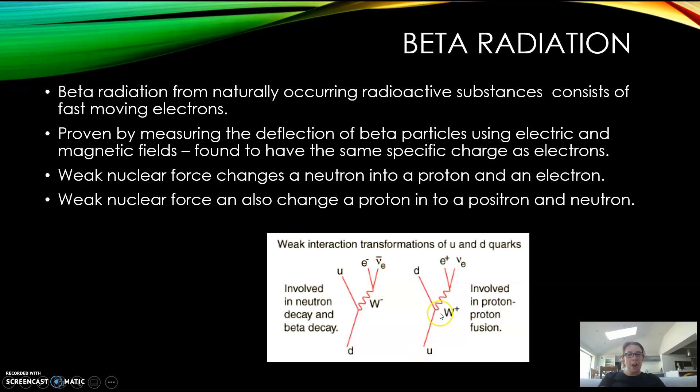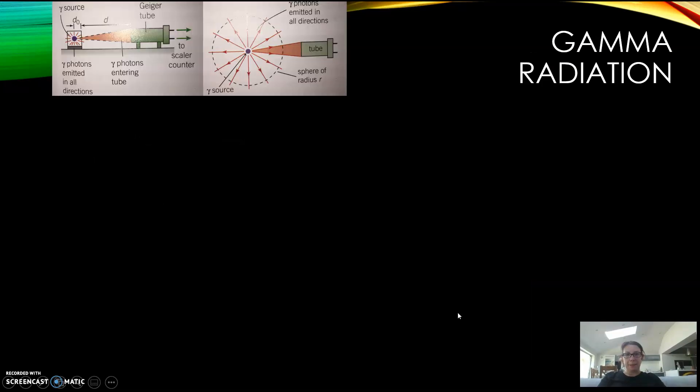These are the diagrams that go with that. You can see the quark change here. For beta minus decay, you've got a down quark changing into an up quark, releasing your electron which is the lepton, and then the anti-neutrino to conserve lepton number.